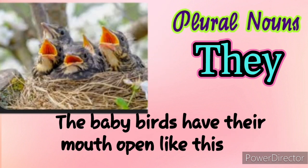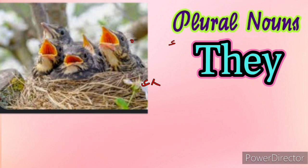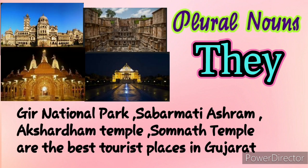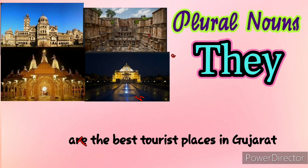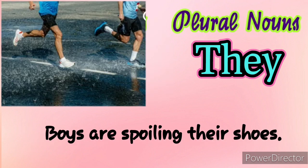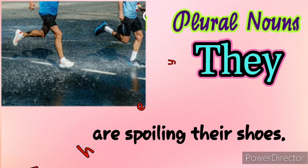The baby birds have their mouths opened like this — They have their mouths opened like this. Gir National Park, Sabarmathi Ashram, Akshardam Temple, and Somnath Temple are the best tourist places in Gujarat — They are the best tourist places in Gujarat. Look at the boys — They are spoiling their shoes.